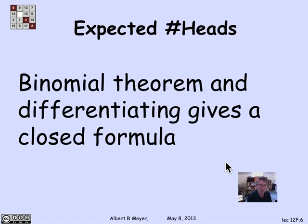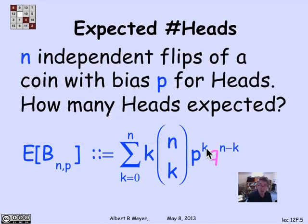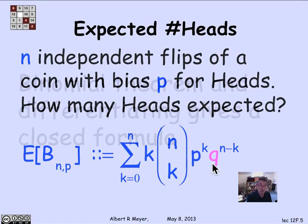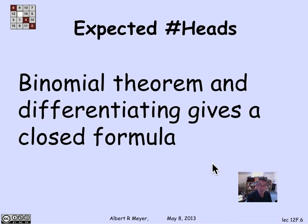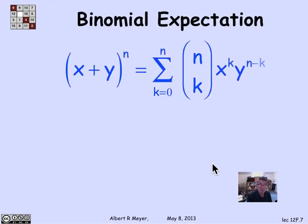When I express the expectation this way, it starts to look like something a little bit familiar. And our strategy is going to be to use the binomial theorem, and then the trick of differentiating it is going to wind up giving us a closed formula for this expression, for the expectation of the binomial variable. So let's remember the binomial theorem says that the nth power of x plus y is the sum from k equals 0 to n of n choose k, x to the k, y to the n minus k.